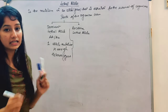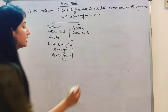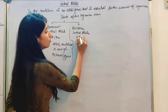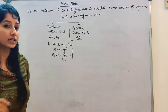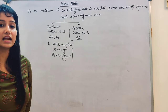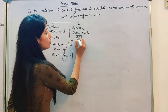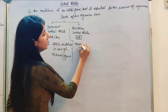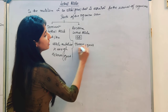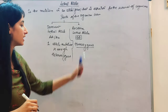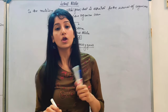But in a recessive lethal allele, the homozygous condition is necessary. Until and unless the homozygous condition is present, the organism will not get the disease and it won't get killed — it will survive. Only the homozygous condition will lead to the recessive lethal gene condition, while the dominant lethal allele works in the heterozygous condition.